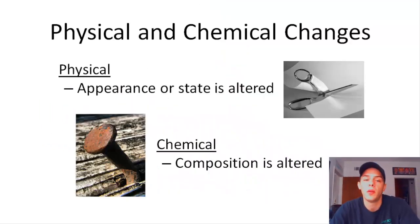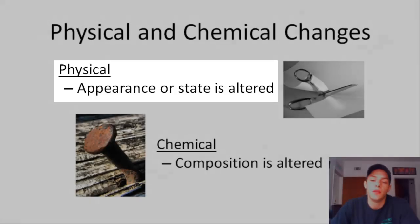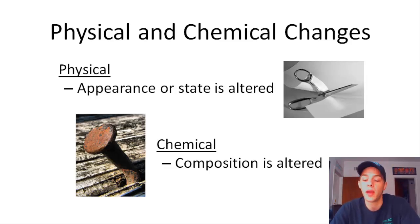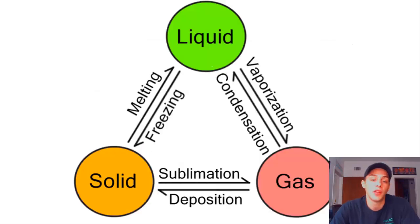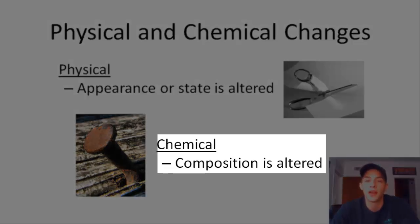Now let's talk about physical and chemical changes. In a physical change, the appearance or state of matter is altered. A good example is scissors cutting paper — you're splitting the paper, but you're not altering its chemical composition. All of the state changes I just went over are physical changes. In a chemical change, the composition of the matter is actually altered — substances are transformed into new substances.